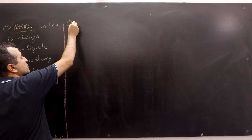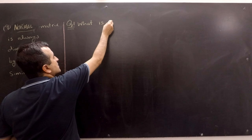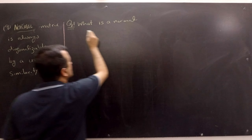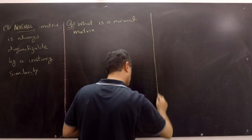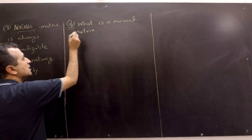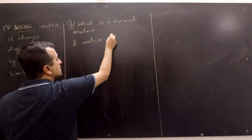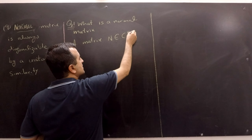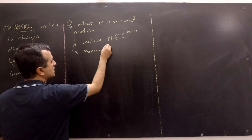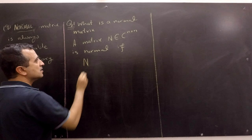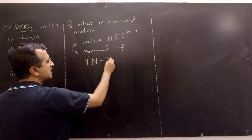Our question number one is: what is a normal matrix? A matrix N, which is a square matrix of complex entries, is normal...